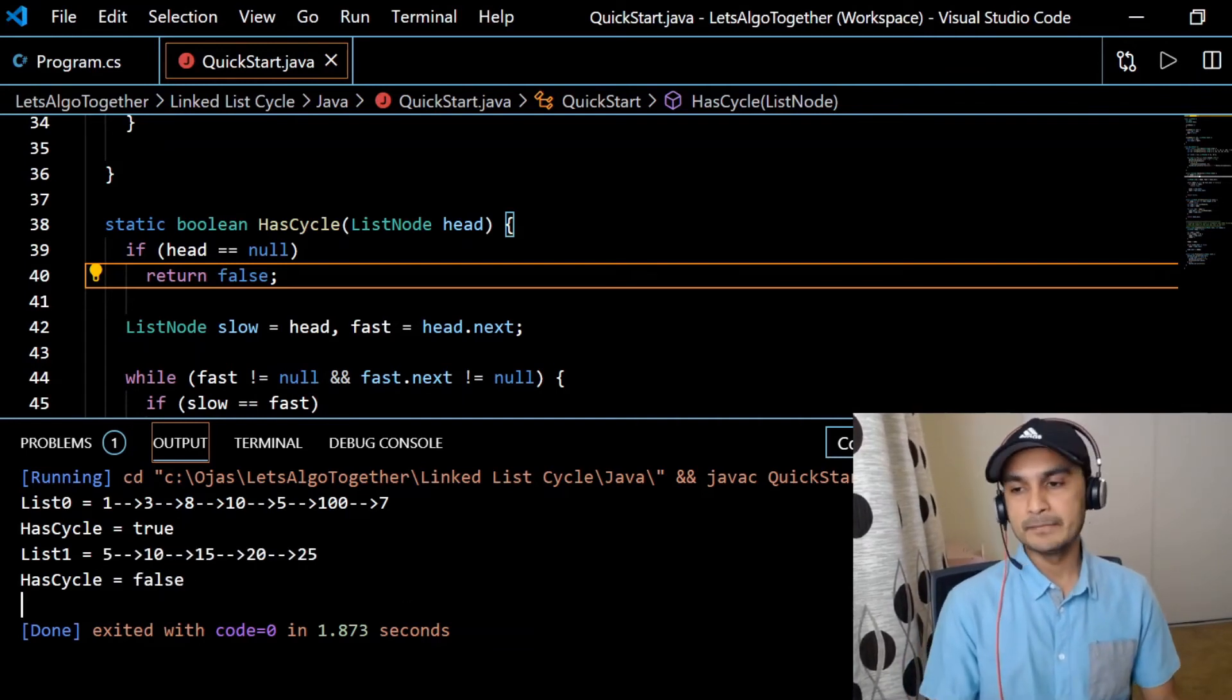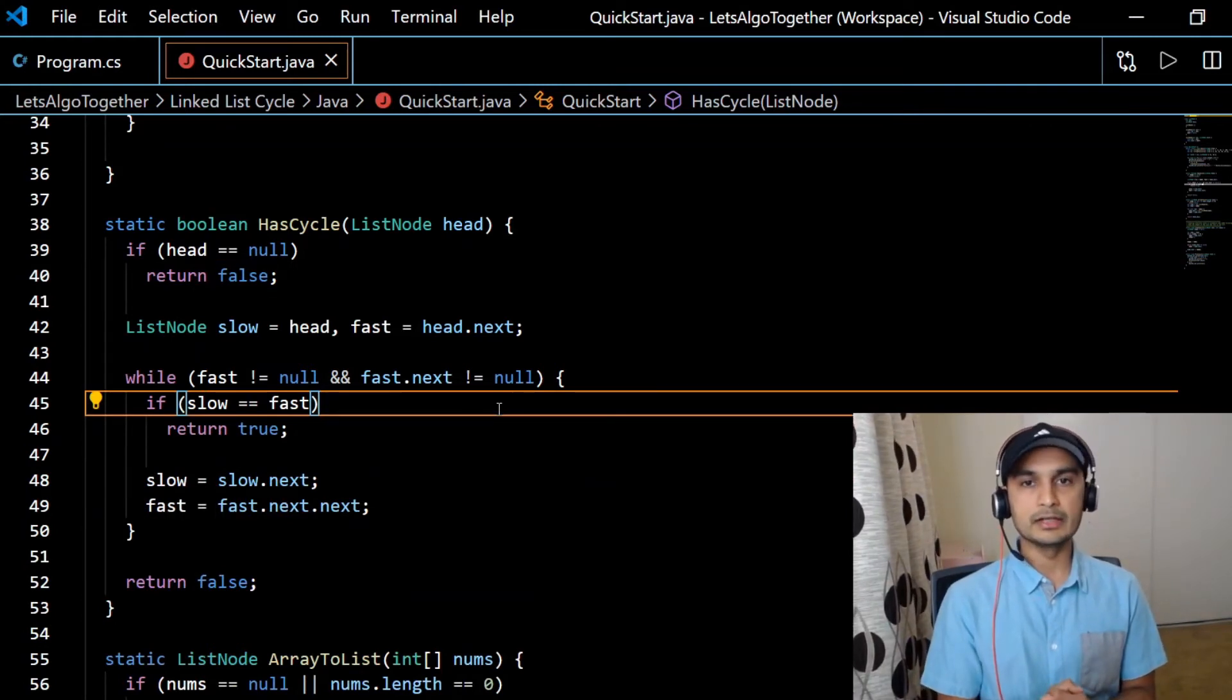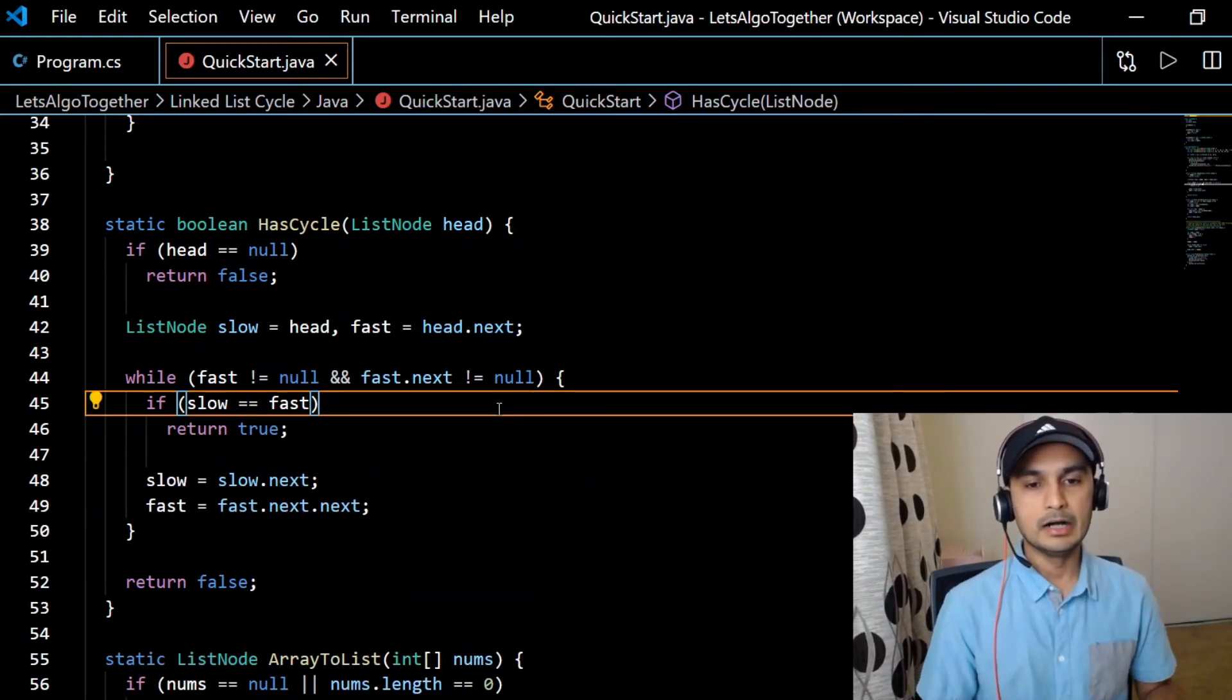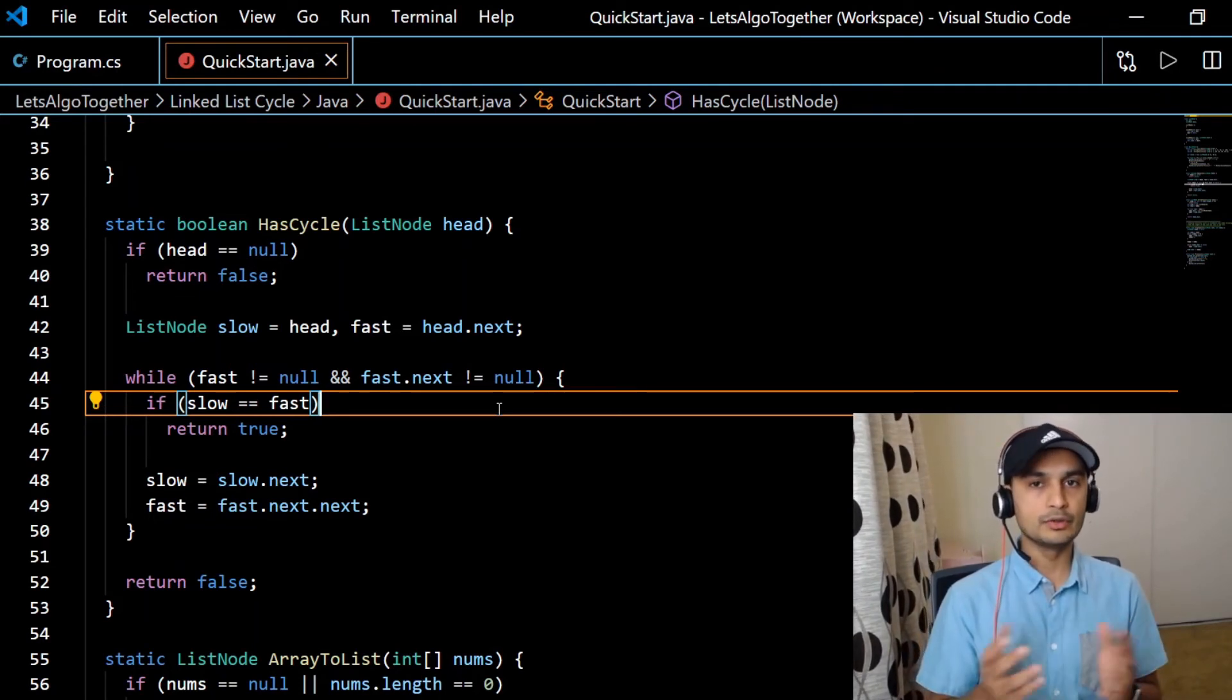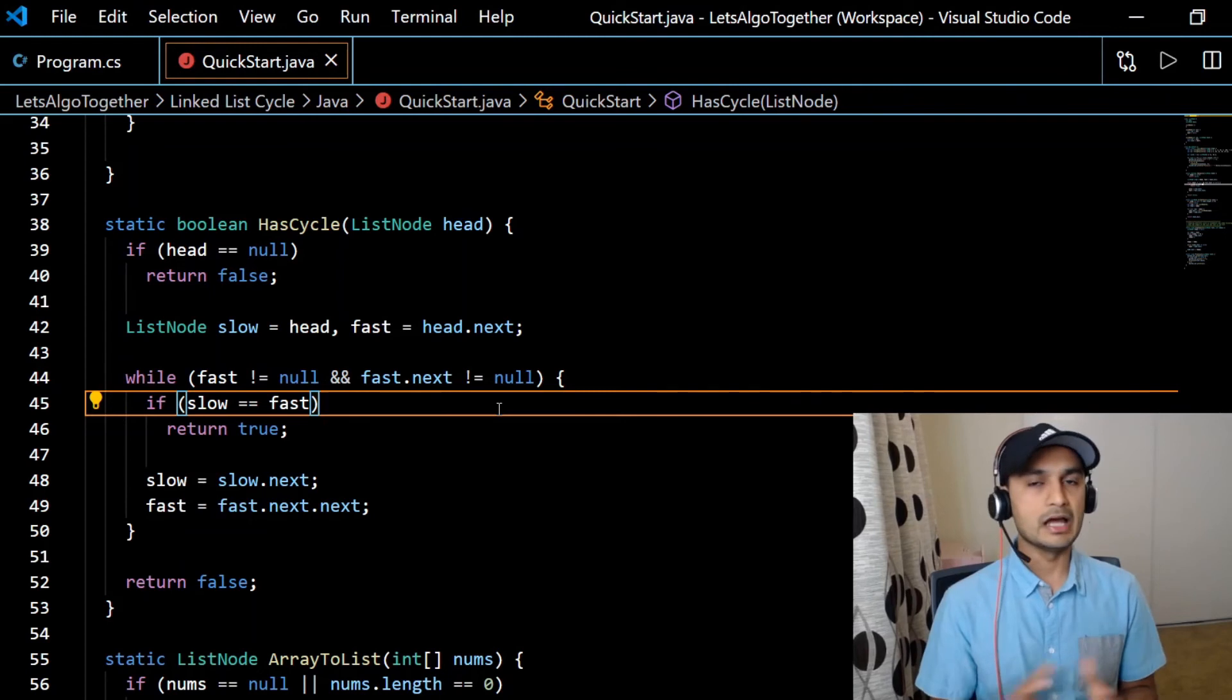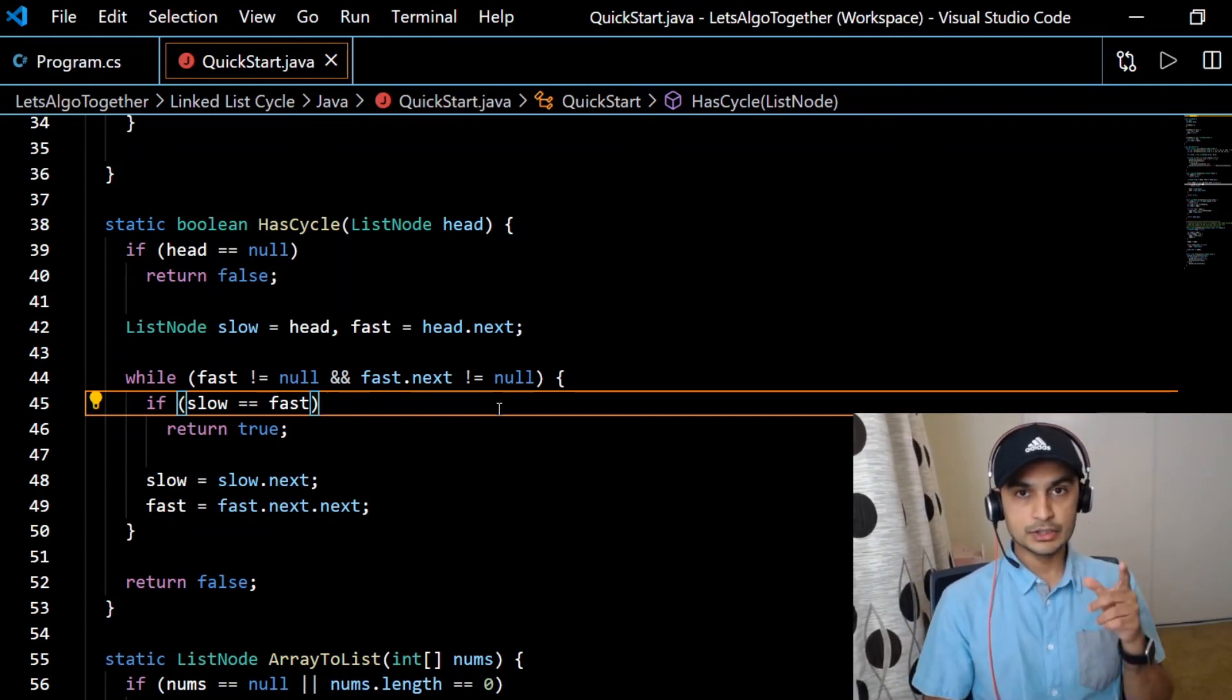There you go guys, this is short and sweet, simple code to detect if a linked list has a cycle or not. I'll put the link to both the code in the description below. If you guys like the video and learned something new, give me a thumbs up and let me know your feedback and suggestions in the comments. Subscribe to the channel for more videos. See you in the next one.